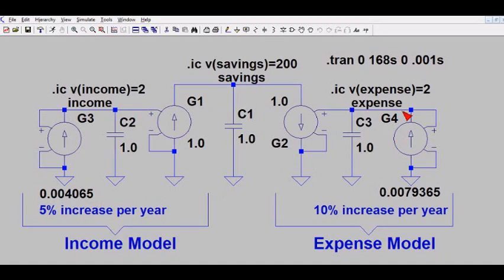Now we've done a similar thing over here for the expense model. This node is labeled expense. We do an initial condition, we set the expense equal to two, or in this case it'll cause two amps to flow in G2, and two amps recall in standard conditions models $2,000 a month. Now we've set the gain of this G4 current source to 10% by giving it this number again that came from our table.